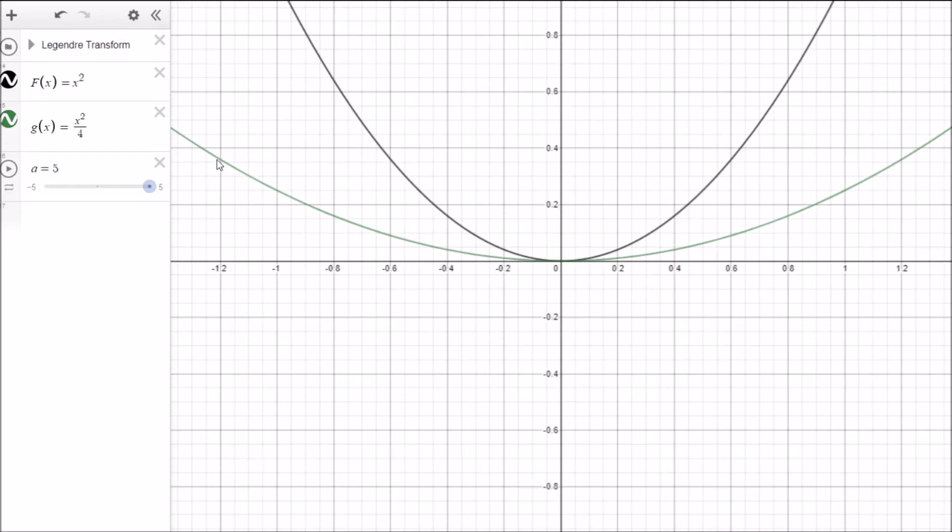Now the interesting thing about the Legendre Transform is that the forward transform and the inverse transform are just the same. If we compare that to the Fourier Transform, the forward transform and the inverse transform are slightly different. We have to take care of an extra factor of 2π.